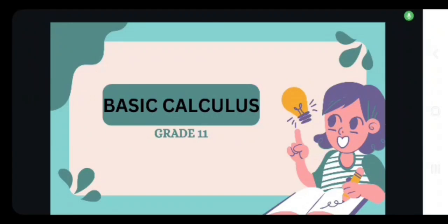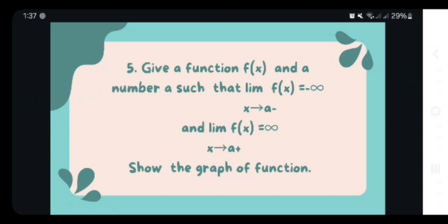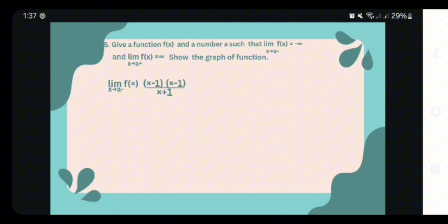A pleasant day to each and everyone. Today I'm going to discuss question number 5: give a function f(x) and a number such that the limit of f(x) from the left equals negative infinity and the limit of f(x) from the right equals positive infinity. Show the graph of the function. The equation is (x minus 1) squared over (x plus 1).